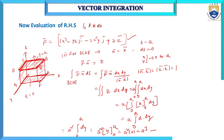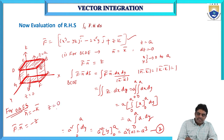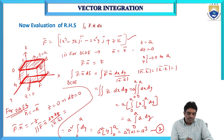For the second surface OAFG, the outward normal vector is n̄ = −k̄, so F̄ · n̄ = −z. The equation of this plane is z = 0, so z = 0. The integral is ∬ F̄ · n̄ dx dy / |n̄ · k̄|, with F̄ · n̂ = −z = 0. Therefore the integral value is 0.